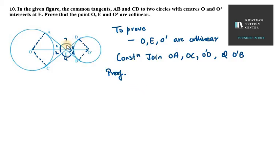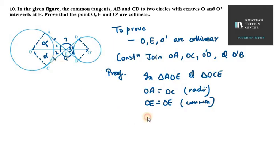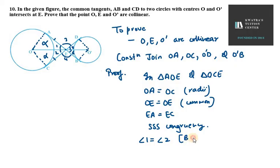In the proof, we show two triangles — OAE and OCE — are congruent. OA equals OC as radii of the circle, OE equals OE as common, and EA equals EC since E is an external point and tangents from an external point are equal. So by SSS congruency, angle 1 equals angle 2 by CPCT.